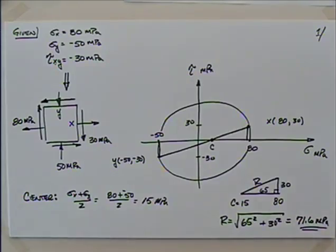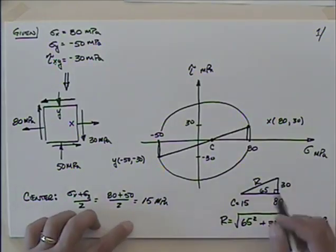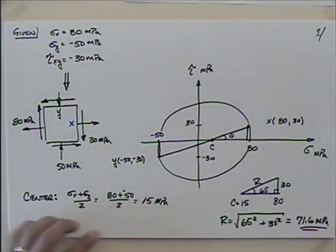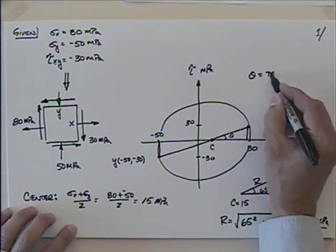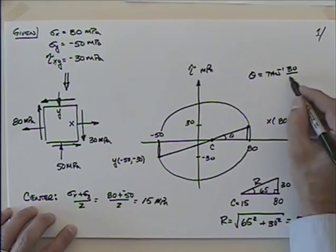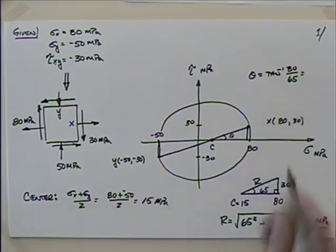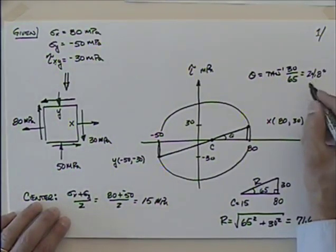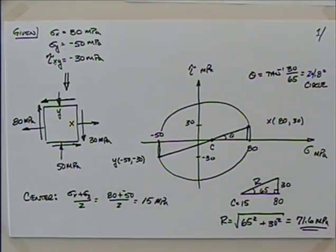I think that's what we found last time. The angle theta in this triangle would be the arctangent of the opposite side, 30, divided by the adjacent side, 65 — that turns out to be 24.8 degrees. That's on the circle, so we'll have to divide it by 2 when we look at the element. Any questions so far on drawing Mohr's circle?